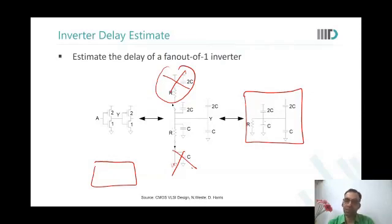So the delay of this is 6RC. But where did the, so we have placed one inverter, one of the other, but, so for the second inverter, I mean, at node Y, we have just included a capacitance.